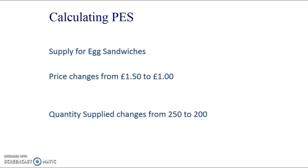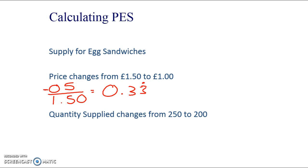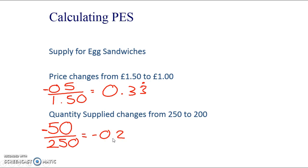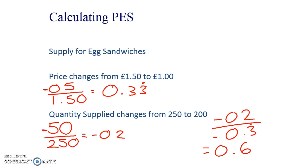Here's a question about egg sandwiches. If the price changes from £1.50 to £1, that's a 50p decrease — minus 0.33, or -33.3%. The quantity supplied has changed from 250 to 200 because suppliers can make less profit now, giving us minus 50 over 250, which is -20%. When we put that together: -20% divided by -33.3% gives us 0.6. Because minus divided by minus removes the negative sign, we get 0.6, which is inelastic because it begins with a zero.